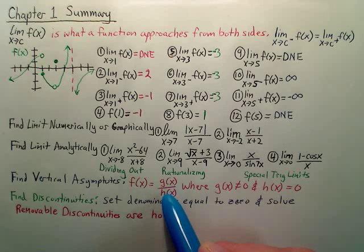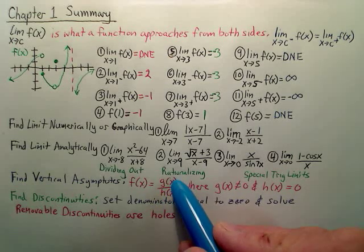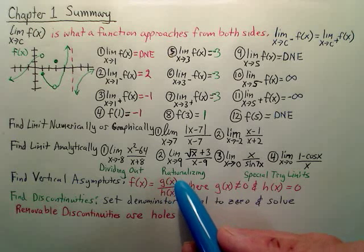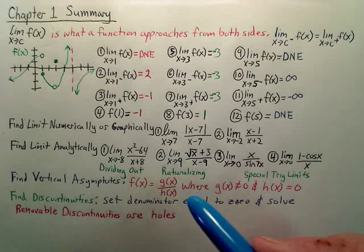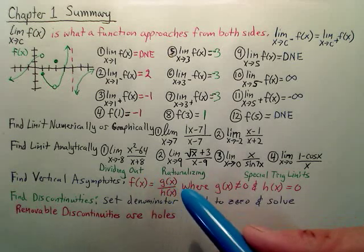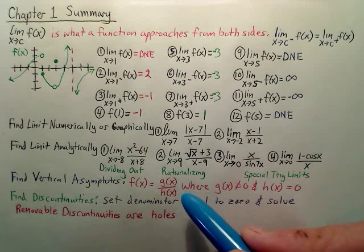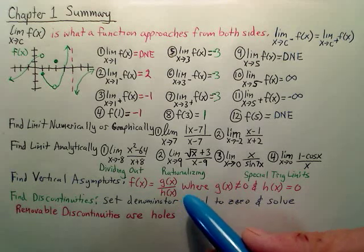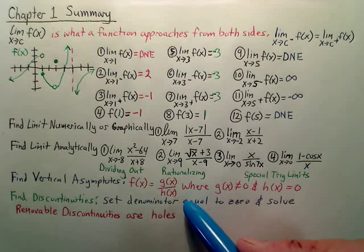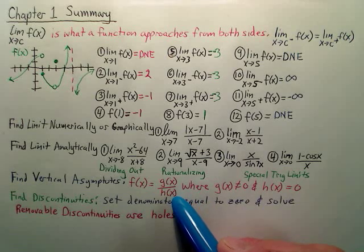So again, you first set the bottom equal to 0. The top, you just don't worry about. And then whatever values you solve for, you plug them in. Again, if you get a number over 0, it is a vertical asymptote. If you get 0 over 0, it's probably a hole. It's called a removable discontinuity.